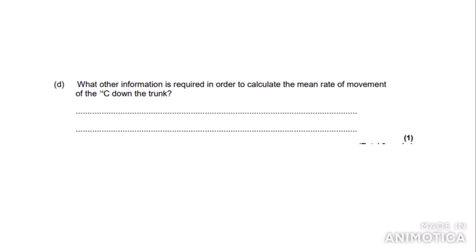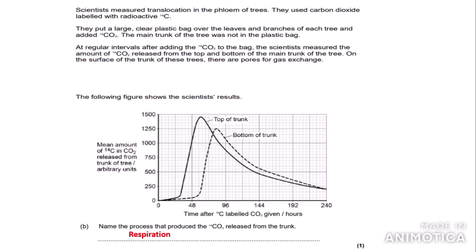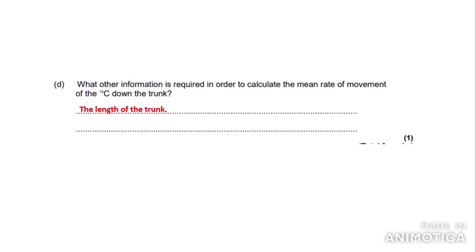Last part of this question: What other information is required to calculate the mean rate of movement of the 14C down the trunk? The experiment has only calculated the amount of 14C and the time taken, but not the length of the trunk. This is important because the length of the trunk affects the rate of movement — a shorter trunk would mean a faster rate. The mark scheme says: the length of the trunk between top and bottom. You just need to refer to the length of the trunk.